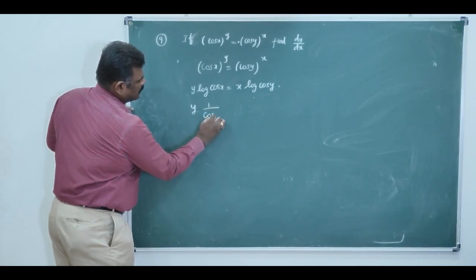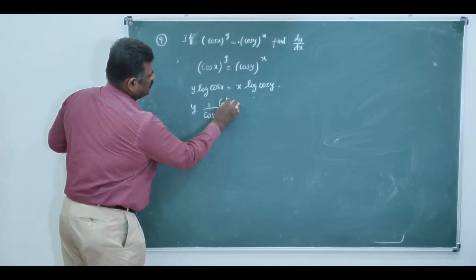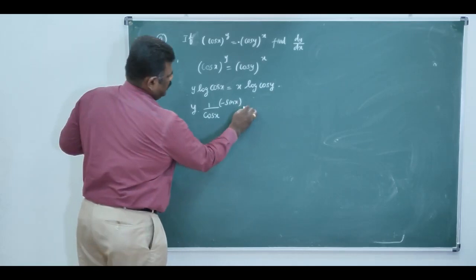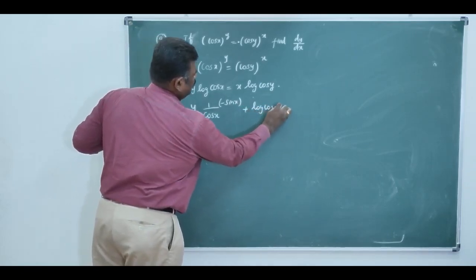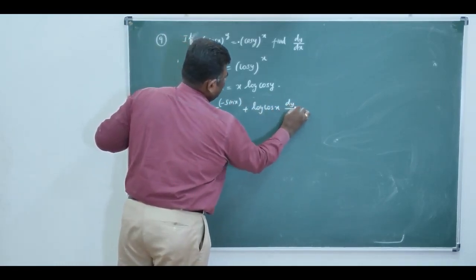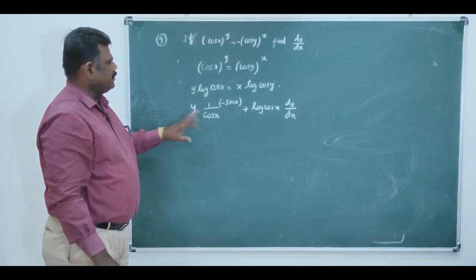Derivative of log cos x is 1 by cos x. Differentiate cos x, it become minus sin x plus log of cos x into derivative of y is dy by dx. So, this is your derivative of the left side.